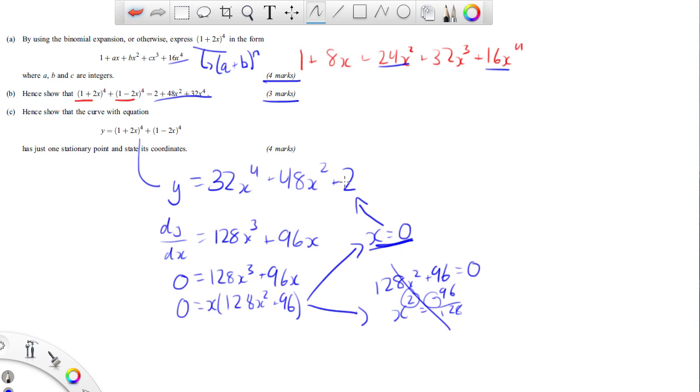So what I'm going to do is I'm going to plug that back into my original to find the Y value. Here, zero, zero plus two. So the point is zero comma two. And that's it. And that was four marks. So that's fantastic.